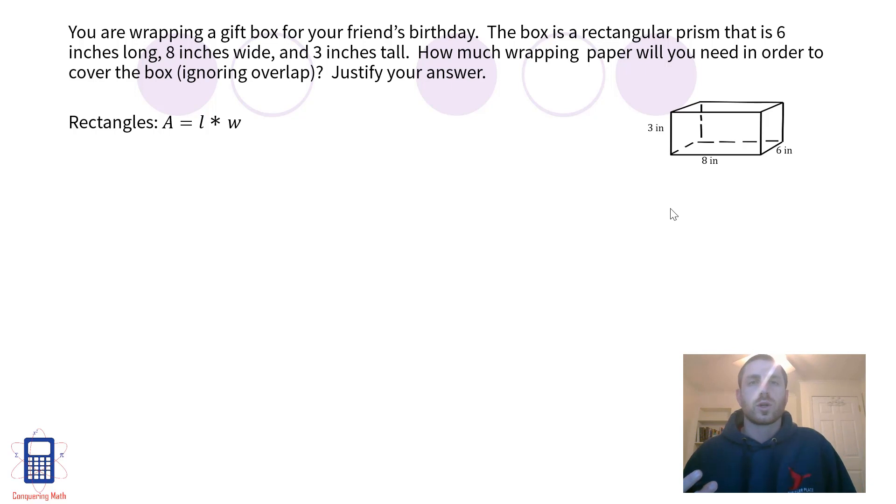Now what we're going to do is we're going to find the areas of each of the individual rectangles and then we can add them up and that'll give us the answer. Since we have three pairs of rectangles here, we only have to find the area of each pair once and then we'll include it in the answer.